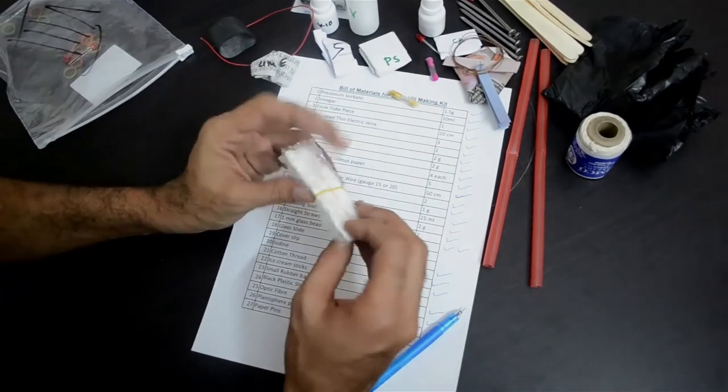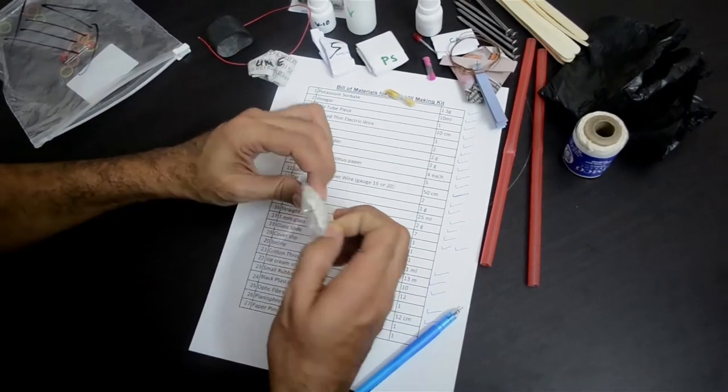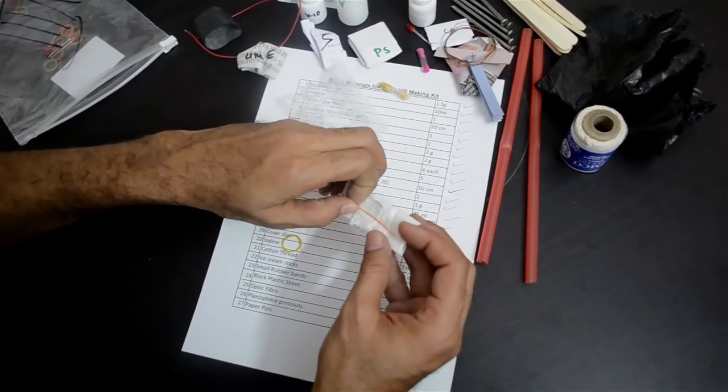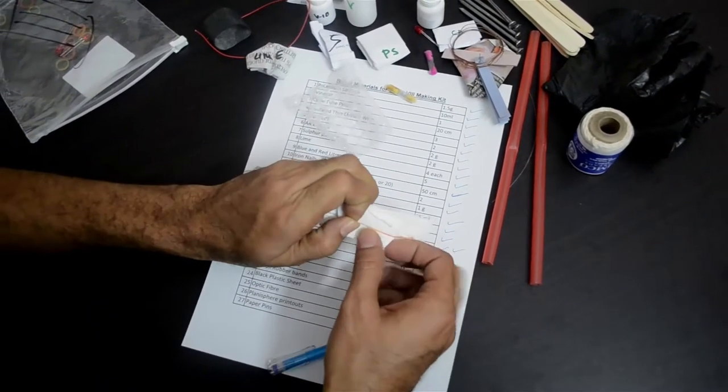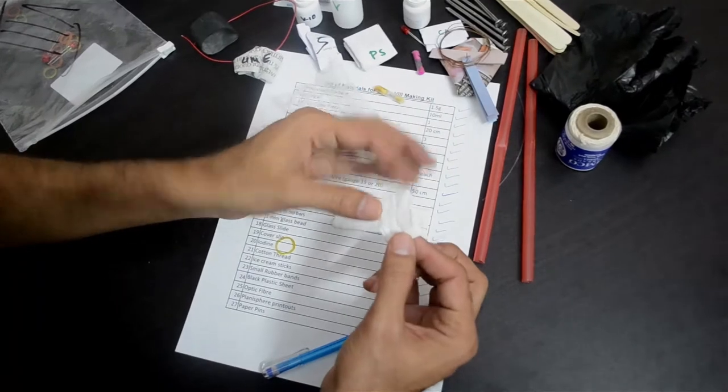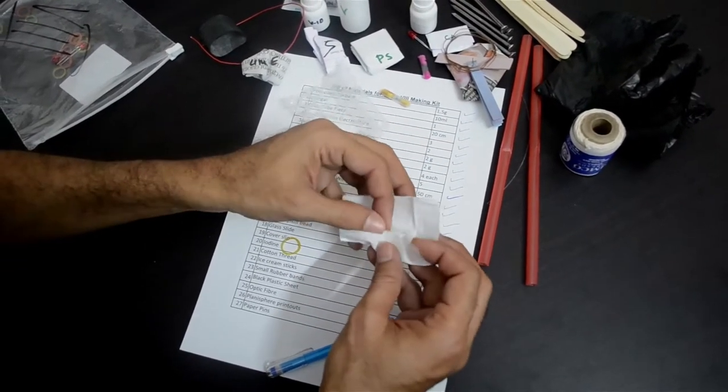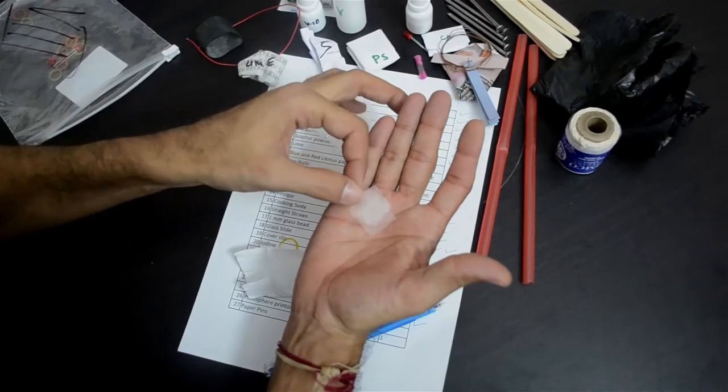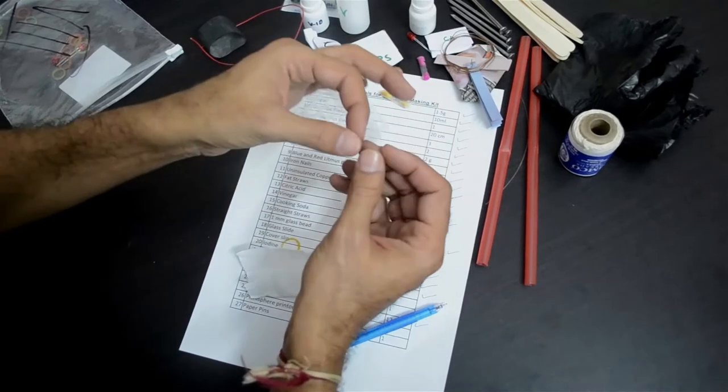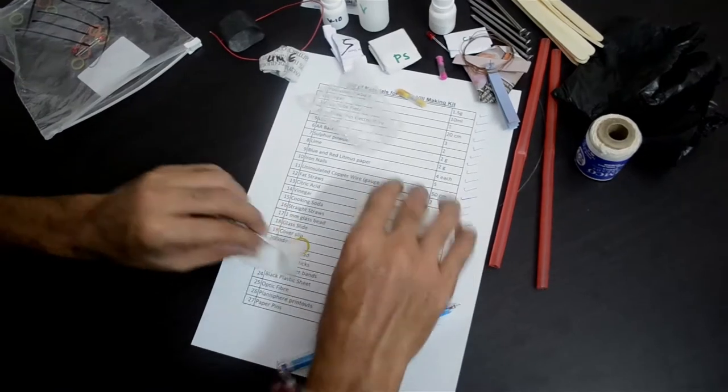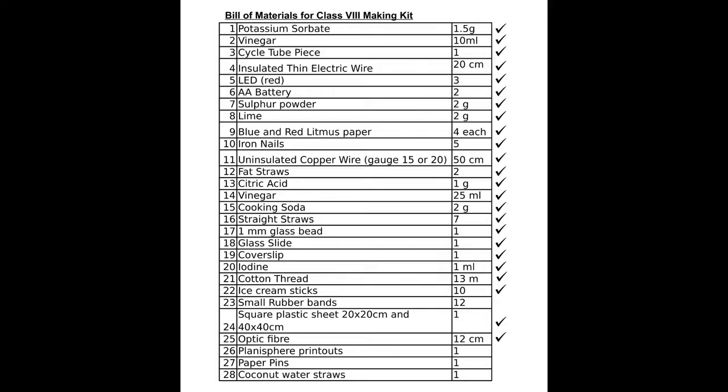Then in this packing you will find a slide. Again it is nicely packed inside a bubble wrap, so that the glass slide does not break. And above the slide you will find another packing. Please handle this carefully, because this is a very thin glass. Inside the tissue you will find these cover slips. We have provided more than one cover slip, so that if one breaks you can use the other. So 1 glass slide and 3 cover slips inside the same bundle. Glass slide which is item number 18 in our list, and cover slip which is item number 19.